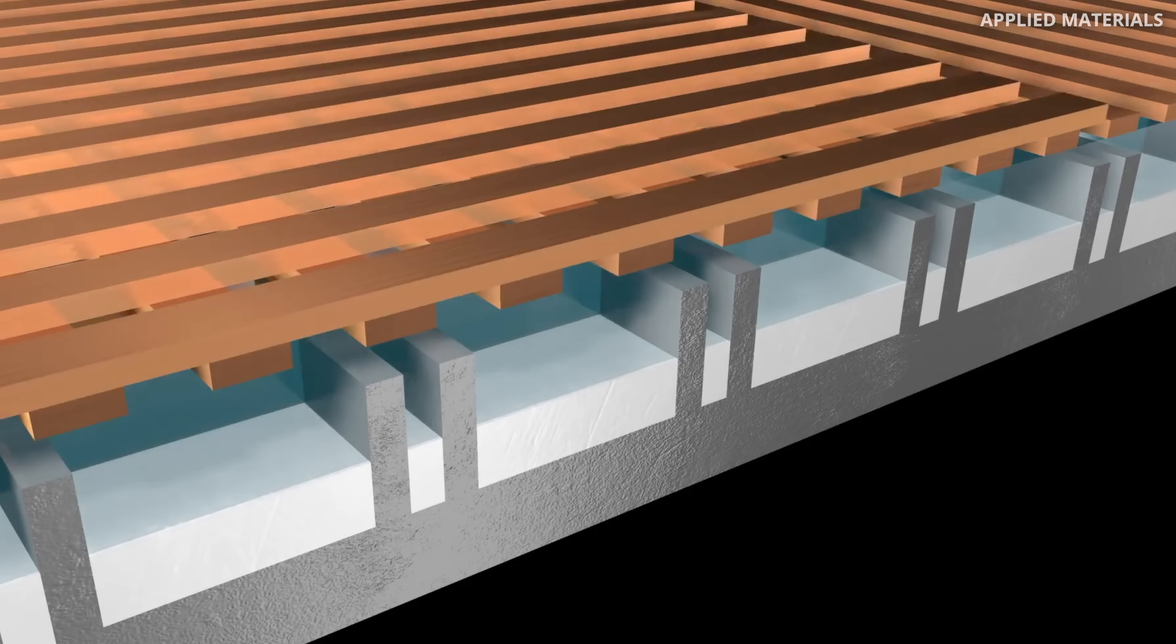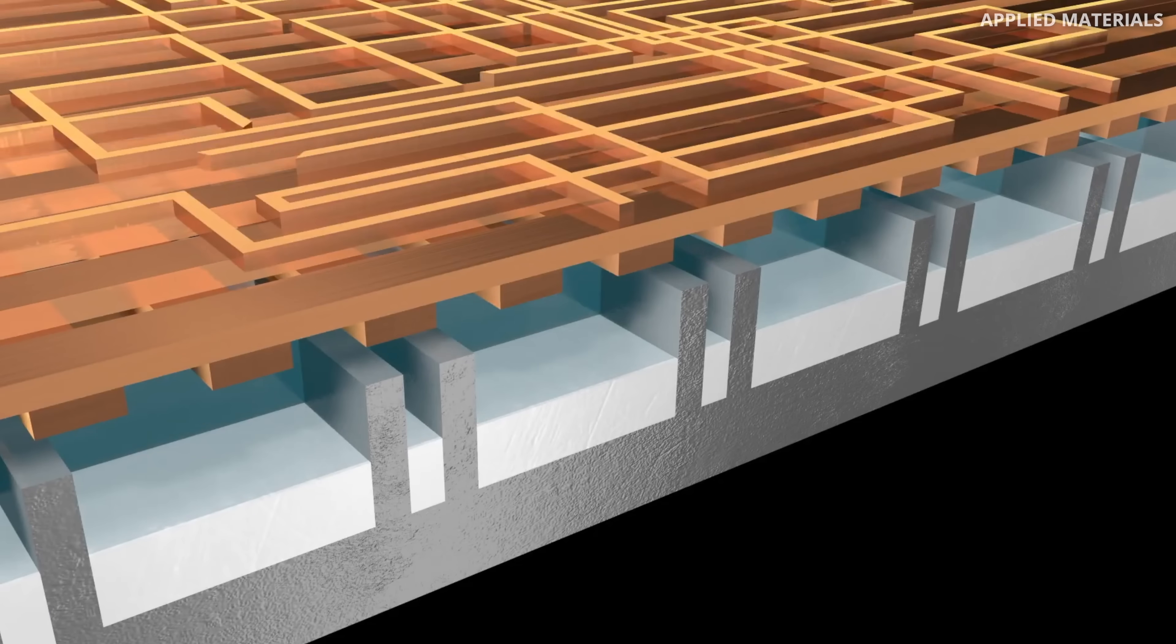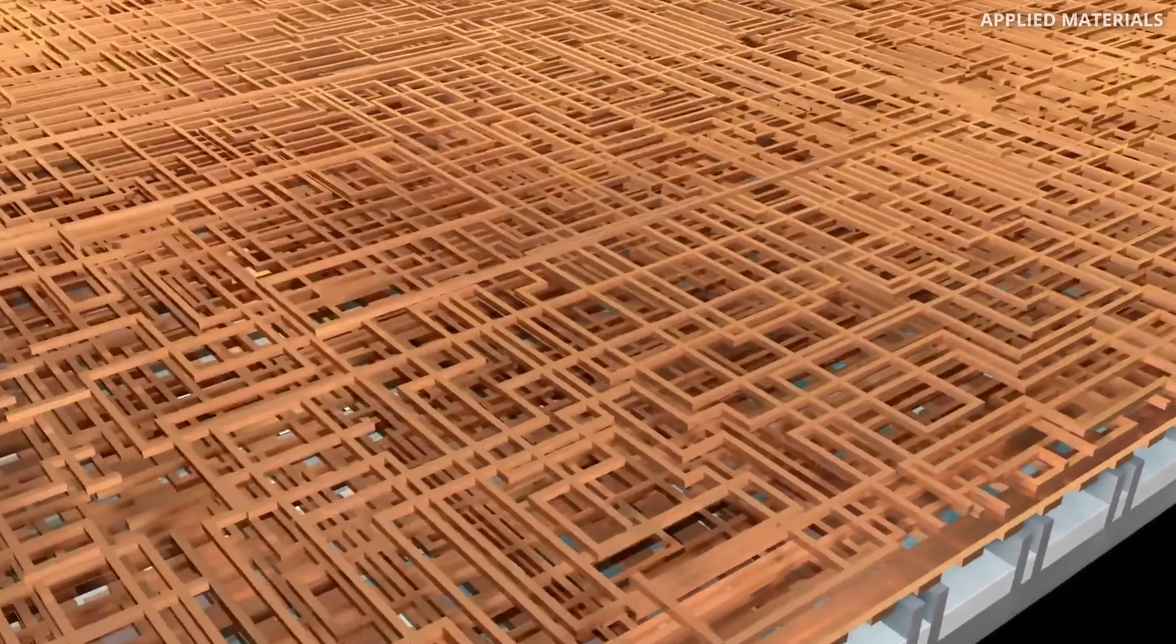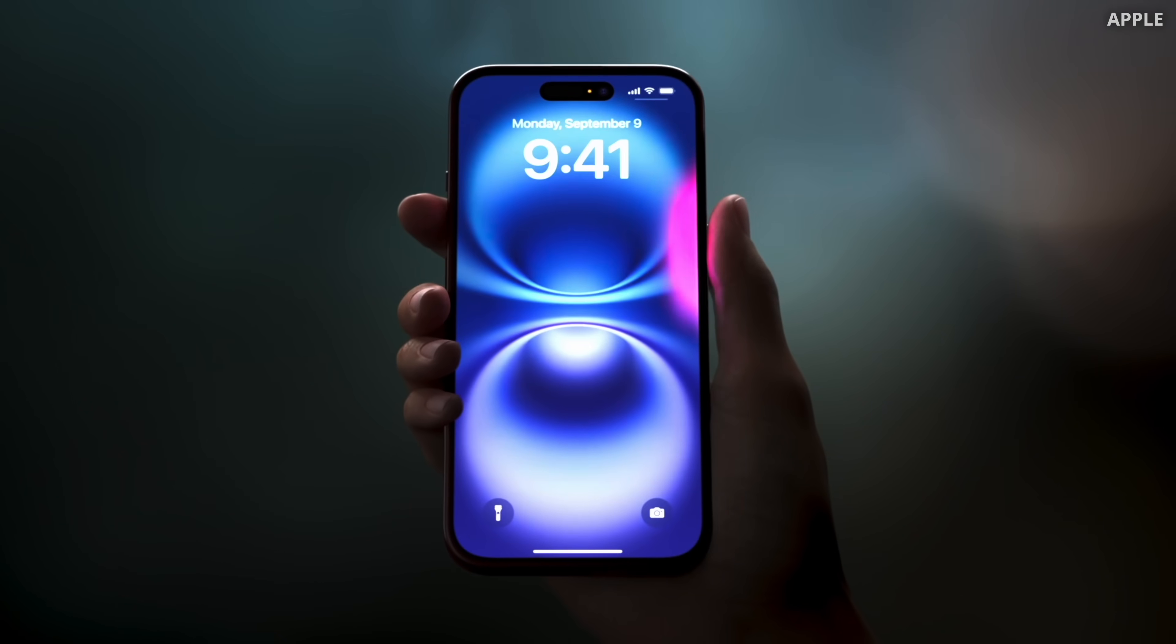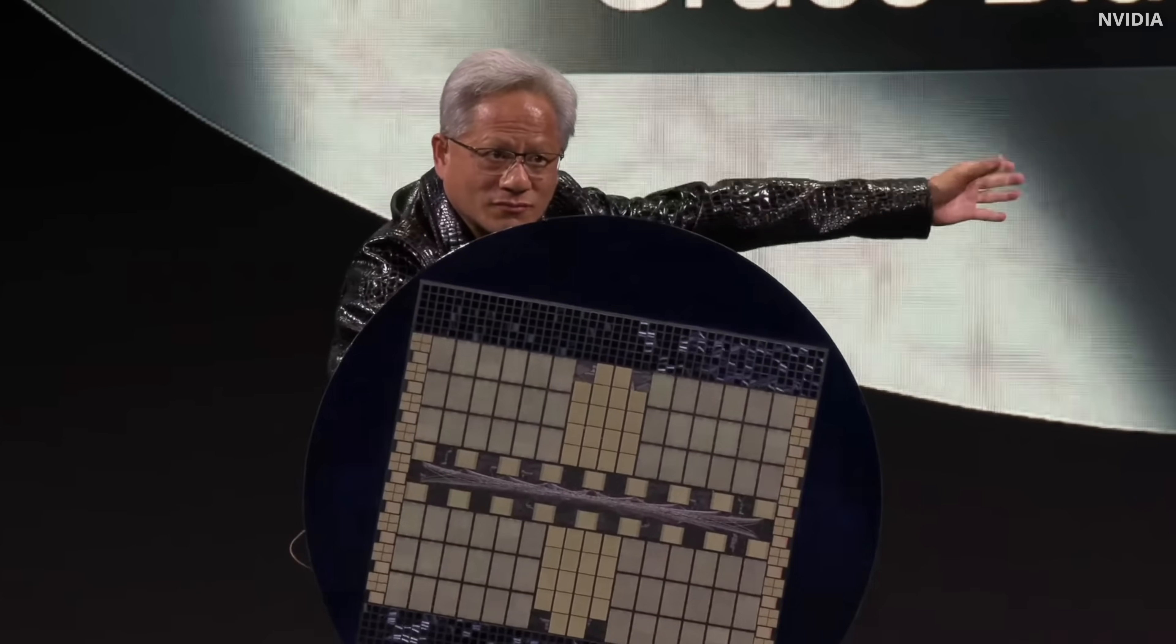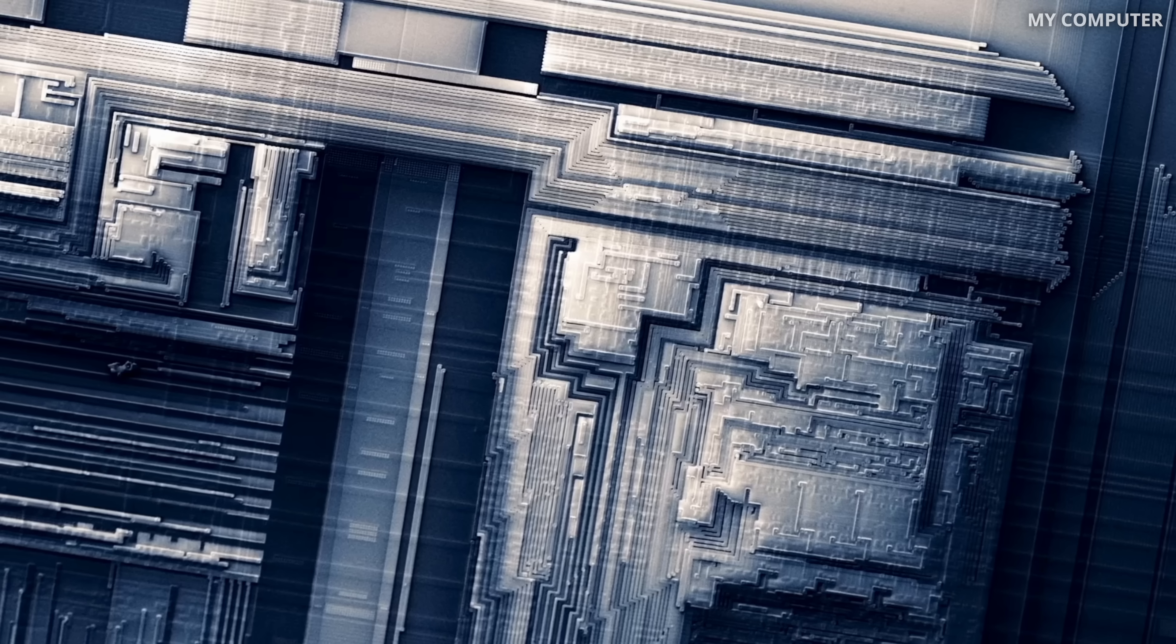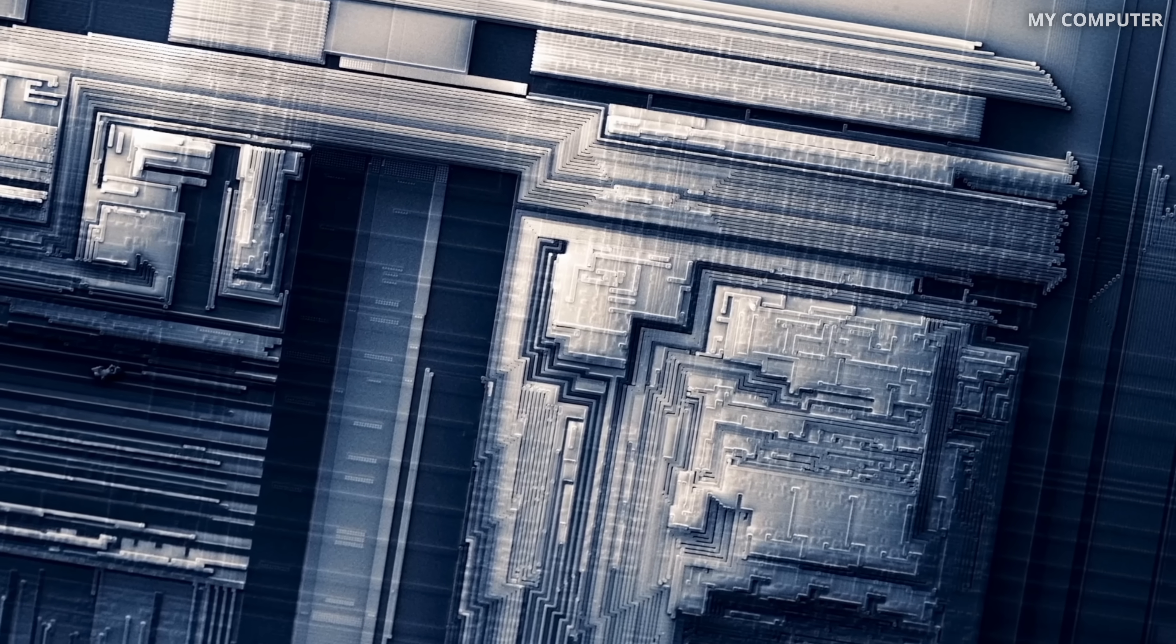Today's chips move data using electrons traveling through tiny metal wires. It's worked for decades. It's how we got faster phones and most powerful AI chips. But we are now running into a big problem.